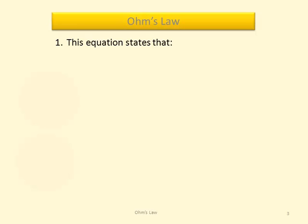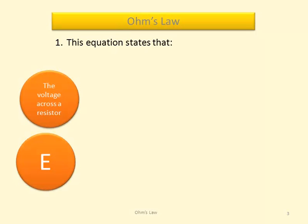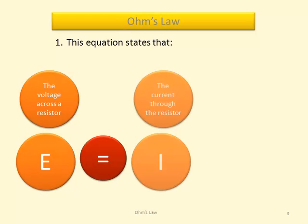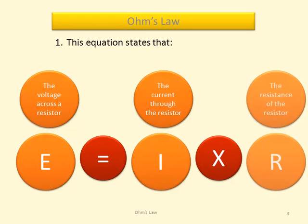This equation states that the voltage across a resistor, E, is equal to the current through the resistor, I, times the resistance of the resistor, R.